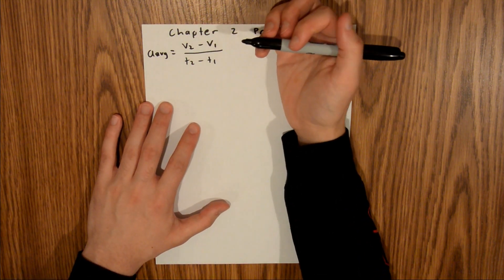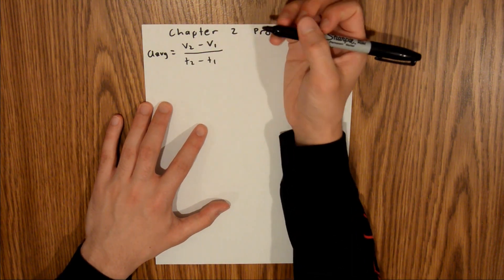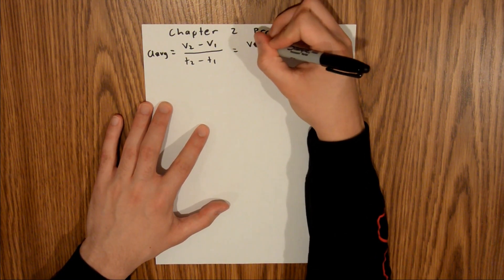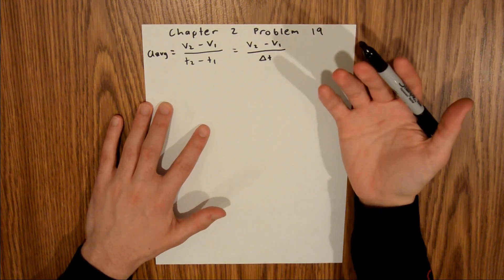And now we aren't given our times in the problem, but we're given a total time, which is actually this entire denominator here. So this is equal to V2 minus V1 over delta T, where delta T just means a change in time.